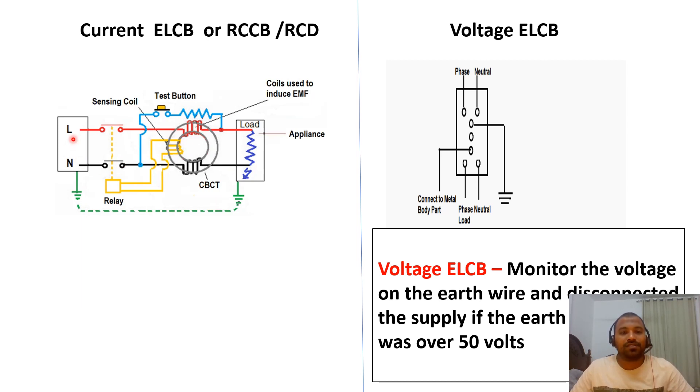What is happening? This is your phase and neutral. It is connected to the ELCBs. When there is a normal condition, your phase current flows. We have a CBCT there. Core balance current transformer we are keeping here.